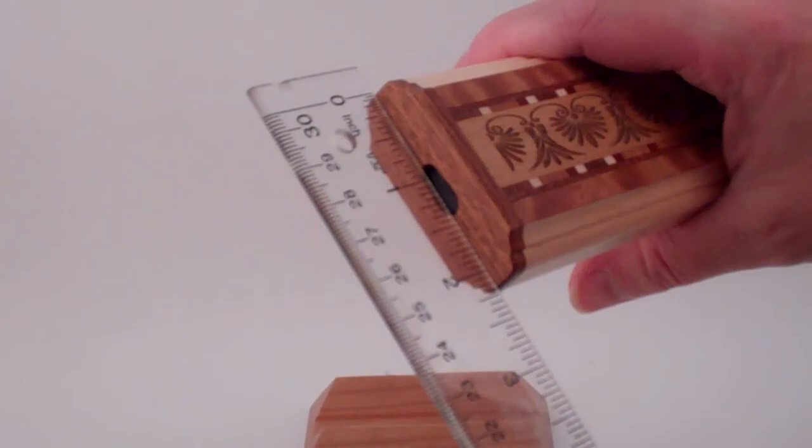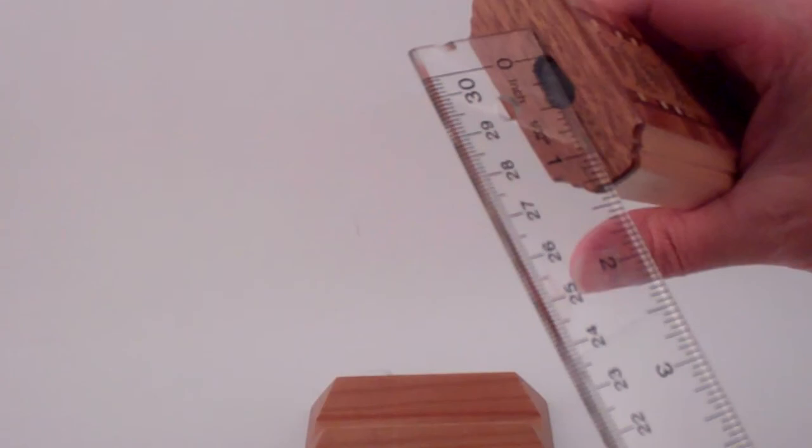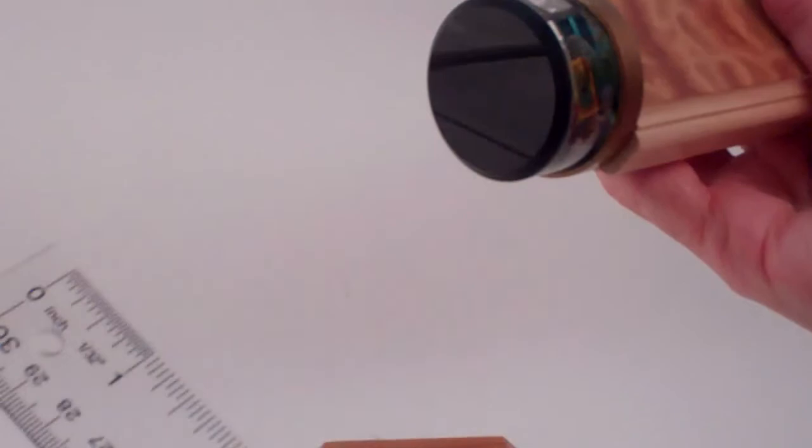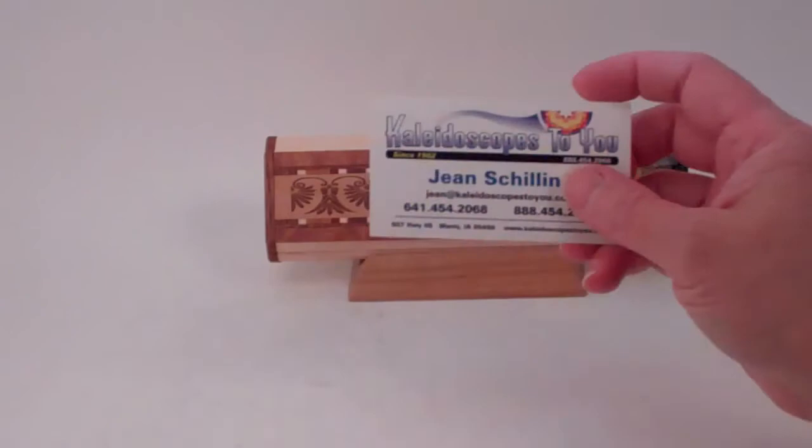The overall size of the kaleidoscope has a width across the eyepiece at two and a quarter inches and an opening to the mirror system approximately at a half inch in width. It has the depth of the entire kaleidoscope at one inch, and the diameter of the object chamber is one and three-quarter inches.